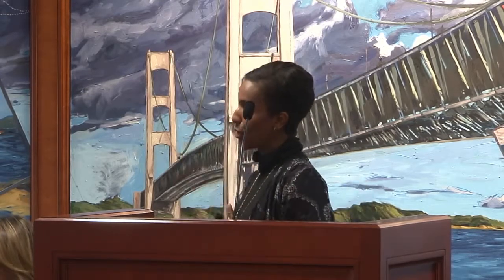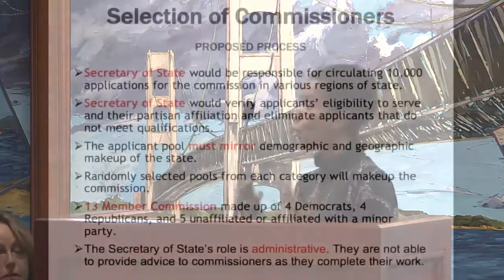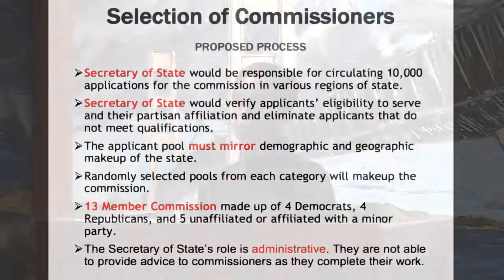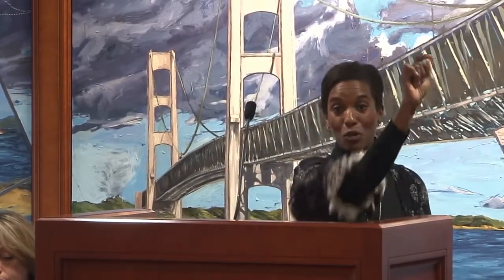From that third iteration, the Secretary of State would then create a randomly selected pool to get to our 13 members. There's a step in between: the state parties would also be able to have some preemptory strikes from that last commissioner pool. The party heads of both parties would be able to strike — for example, if somebody is known to misrepresent their partisan affiliation. This also allows us to have a randomized backup pool in case some commissioners cannot serve the entirety of the term, so vetted people are ready to act as backup.